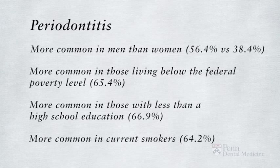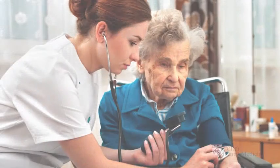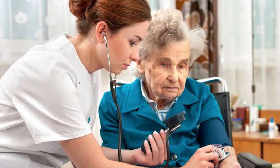Recent CDC data illustrates the prevalence of periodontitis in the U.S. across all ages. 47% of all adults aged 30 years and older have some form of gum disease. Periodontal disease increases with age, and among adults over 65, 70% have some form of gum disease.